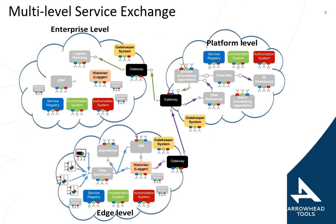This can be abstracted to other levels — not only the production floor edge level, where sensors and actuators are connected with data distributors, algorithms, and human-machine interfaces, but their data can get into the IoT platform level where stream processing happens, business intelligence dashboards show the data, or data gets into a data lake for batch processing. And further up in the Industry 4.0 architecture, you can reach the enterprise level for ERP or logistics planning systems.